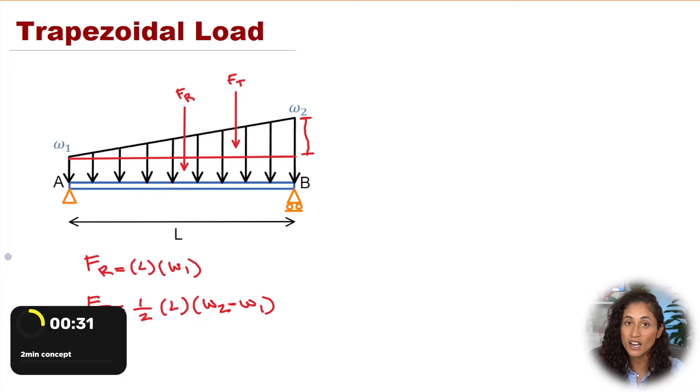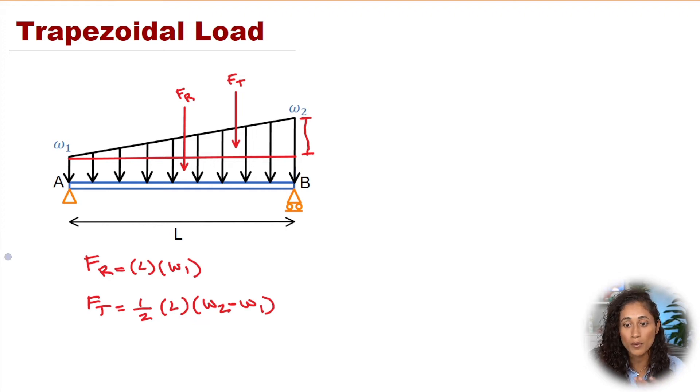The centroid of the rectangle is B over 2. So the moment arm of this force, whether we're taking the moment at A or at B, is L over 2.